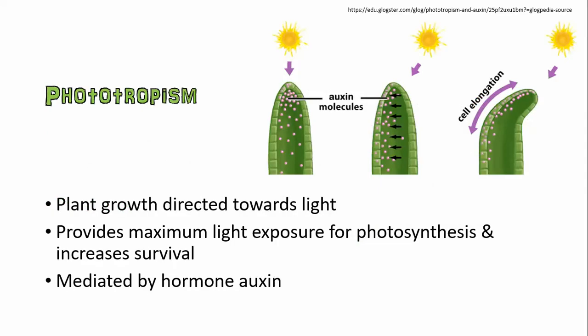That response is called phototropism. You may have noticed it if you're growing some plants yourselves — they tend to grow towards the light. This is a response that plants have to maximize their sugar production during photosynthesis. When they produce more food, they increase their survival chances. It's mediated by a hormone called auxin, which basically causes cells on the dark side of the plant to grow longer, and when they grow longer, that forces the plant to bend towards the sun.